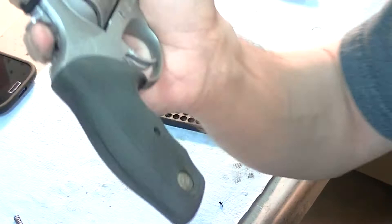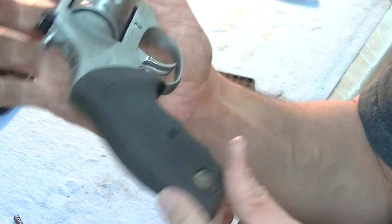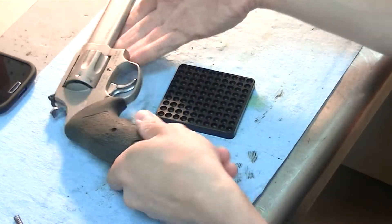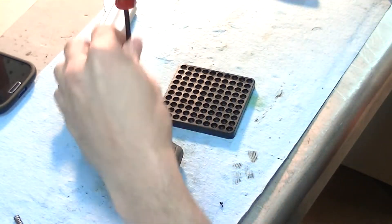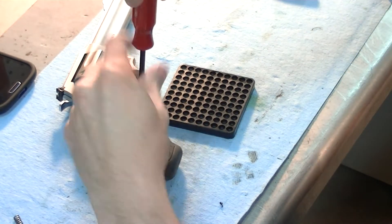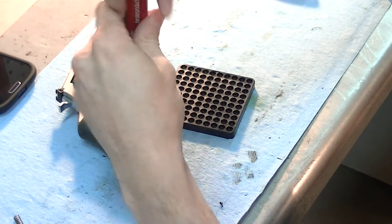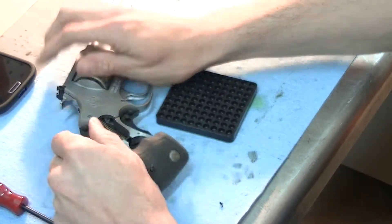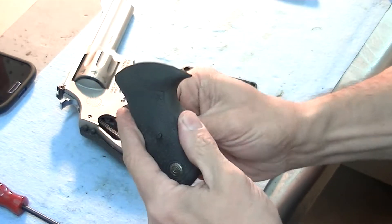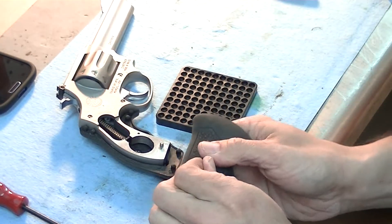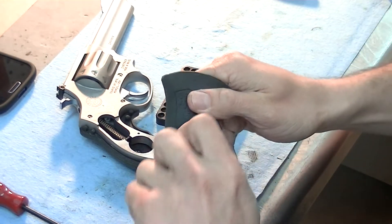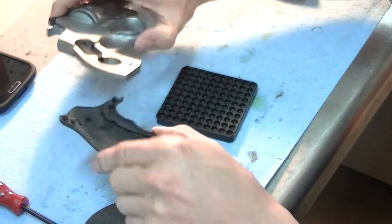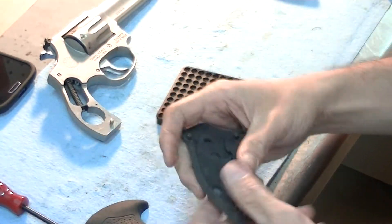You see how we've got a gap there. This is a little loose but still there's a gap. Now, basically what you do is remove your grips and go ahead and get your screw out because you're going to hammer right there. Screw out, grips out.